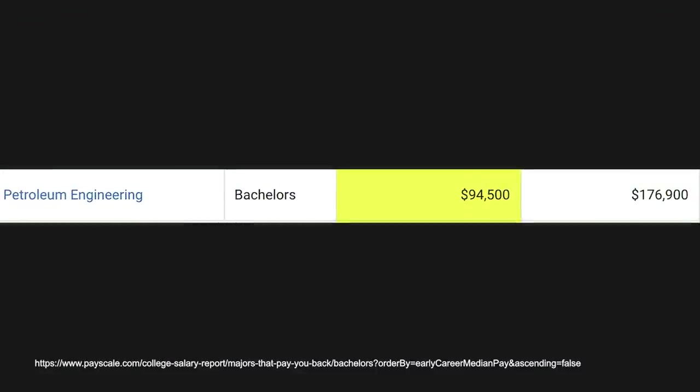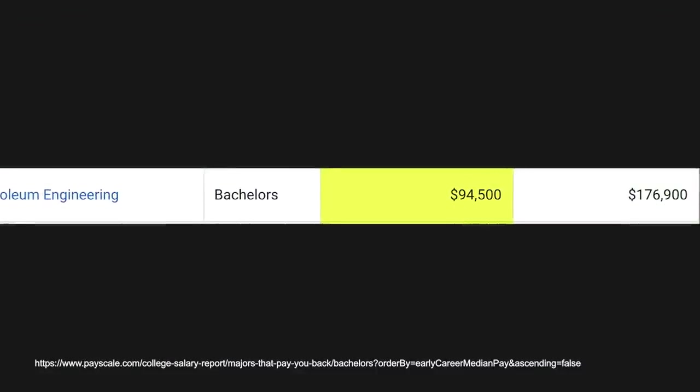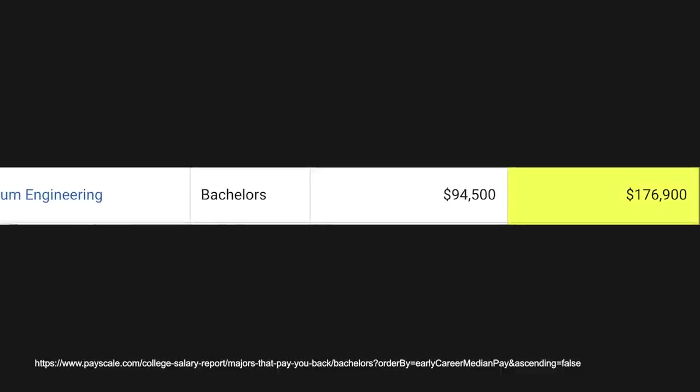Number one on the list is petroleum engineering. No surprise here. Another one from the natural gas industry. With this one, you're going to start off making around $94,000 a year. Right off the bat, mid-career pay is $176,000. I'll mention this as another one where you might have to move somewhere that you wouldn't necessarily want to live. An oil plant in the middle of nowhere, maybe an oil rig in the middle of the ocean, or you might have to move to another country where there's a lot of oil. However, if you're willing to do that, there's a ton of opportunity. You pretty much go in right away making almost six figures a year, which is insane for a four-year bachelor level degree.